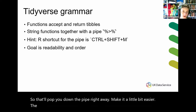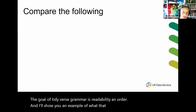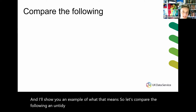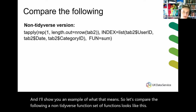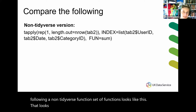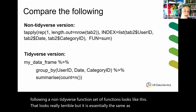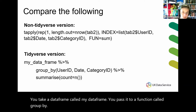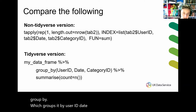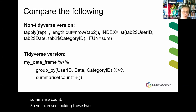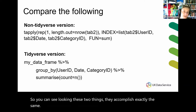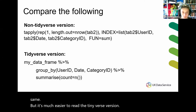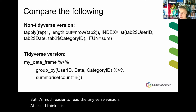The goal of Tidyverse grammar is readability and order, and I'll show you an example of what that means. A non-Tidyverse set of functions looks really terrible, but it is essentially the same as the Tidyverse version, which is to say: you take a data frame called my_data_frame, pass it to a function called group_by, which groups it by user ID, date, and category ID, and it passes that to summarize count. You can see they accomplish exactly the same thing, but it's much easier to read the Tidyverse version.